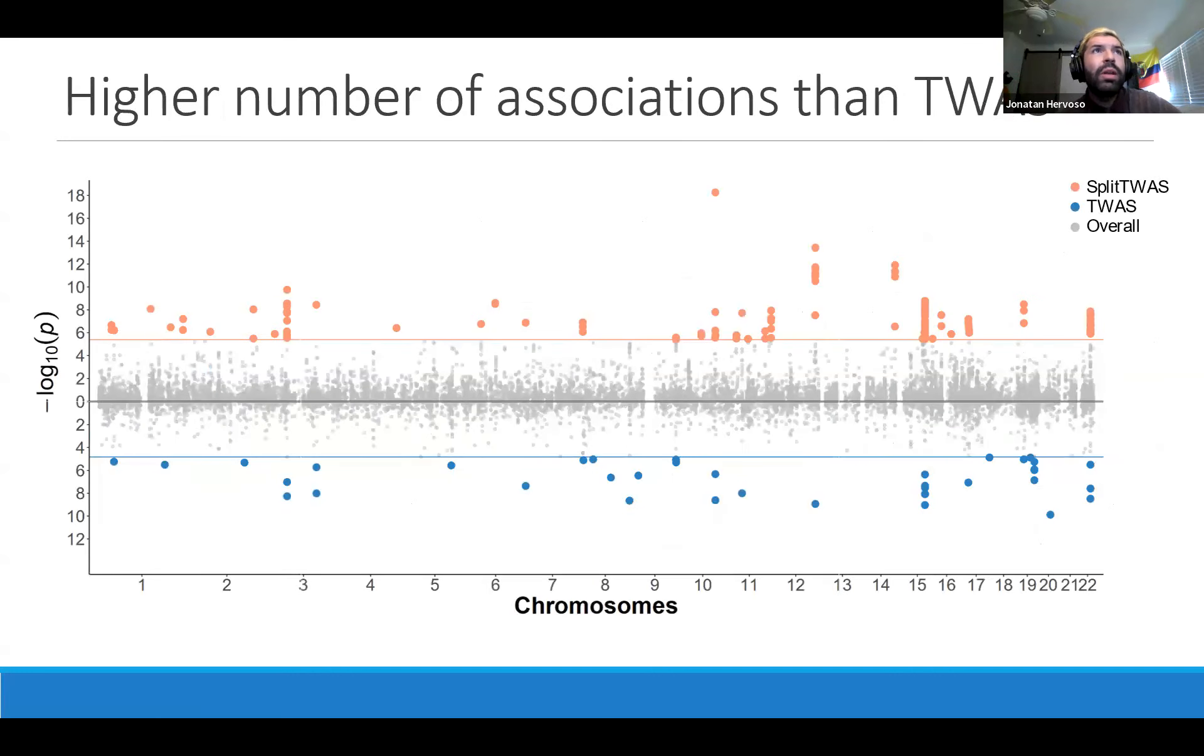Moving forward, we wanted to compare how our approach picked up the same signals or specific signals to traditional transcriptome-wide association studies. This is a comparison in a Miami plot on the associations from the same dataset for our method at the top and traditional TWAS at the bottom. We can see that we pick very similar loci across chromosomes with a couple of signals being specific to TWAS and a couple of signals being very specific to our method.